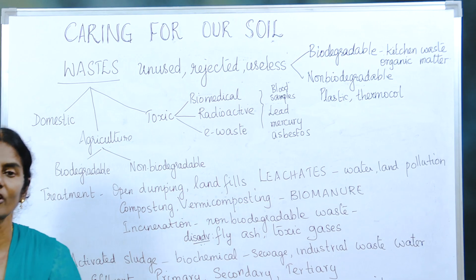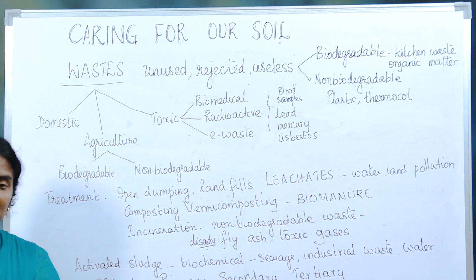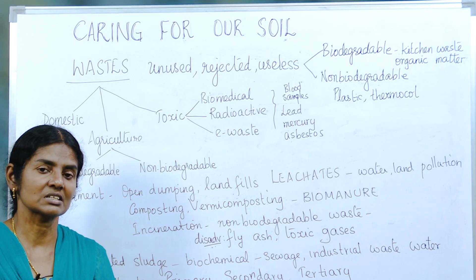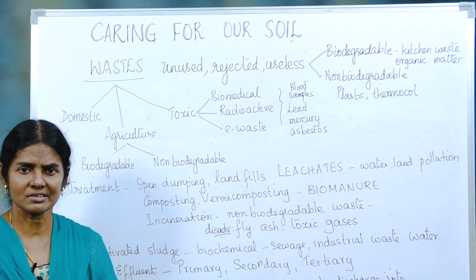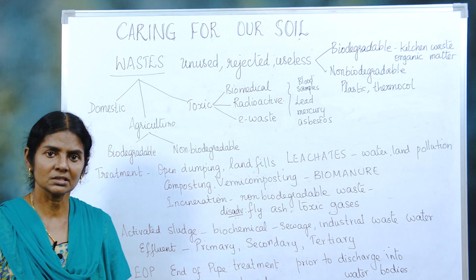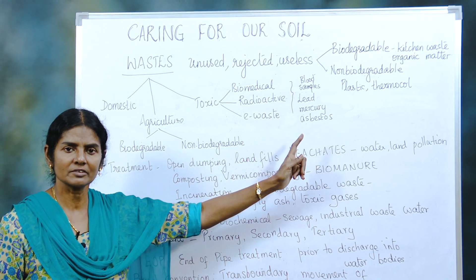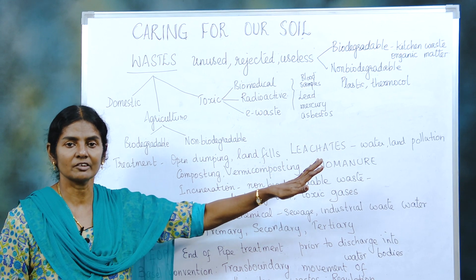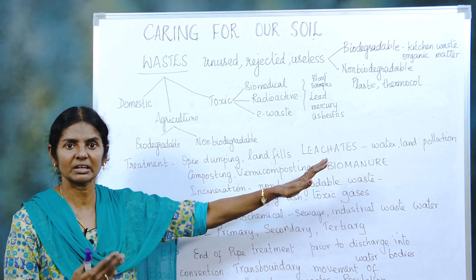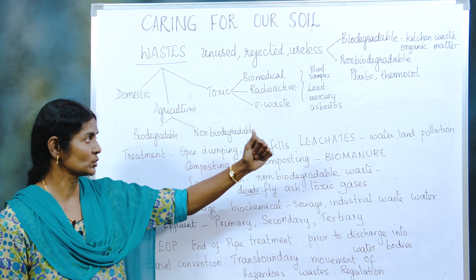Radioactive waste — why do we call that hazardous or toxic? Because it can affect generations. Sometimes it results in mutation and cancer for generations to come. The saddest part of radioactive waste is it takes thousands of years and still lingers in the environment, in the air. So the people who breathe it in are likely to be affected.